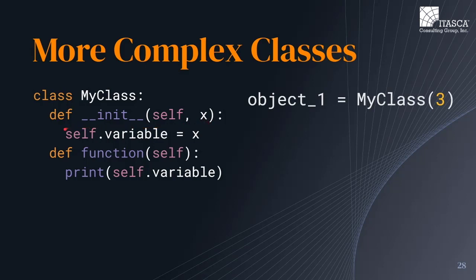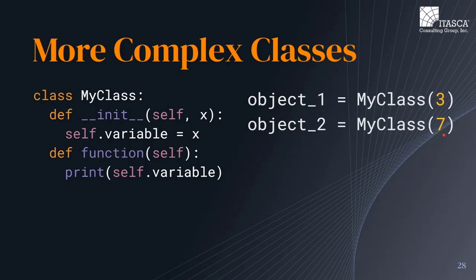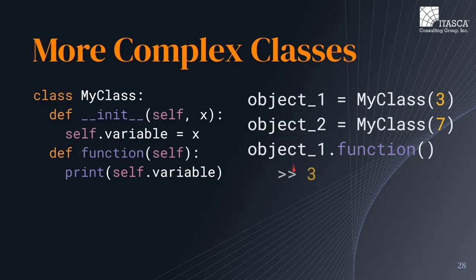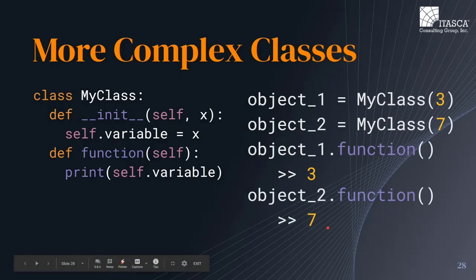Additionally, if we create a second object and pass in an argument of seven, then its variable will be equal to seven. We can see this when we call object one's function — three is outputted — and when we call object two's function, seven is outputted.